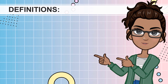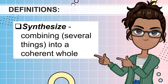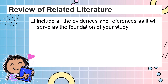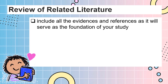We will start by synthesizing all the information you have gathered from the sources. Synthesize means combining a number of things into a coherent whole. The things you will synthesize are from the references you have found and from the notes you have taken. You will not just summarize each idea from each source, but you will examine, evaluate, and analyze them individually — and combine them to compare, contrast, conclude, and generalize. The review of related literature and studies should include all evidences and references, as it will serve as the foundation of your study.